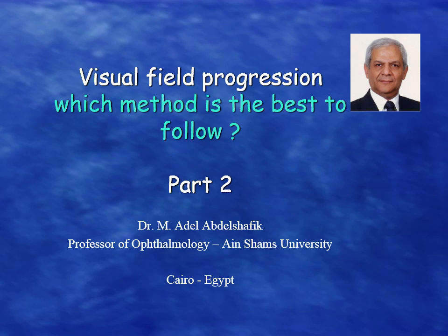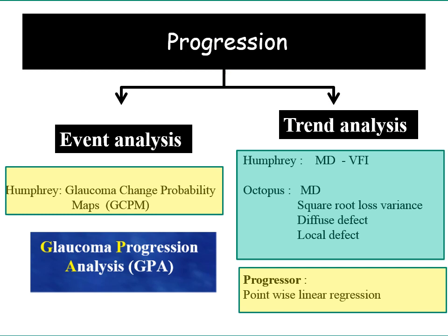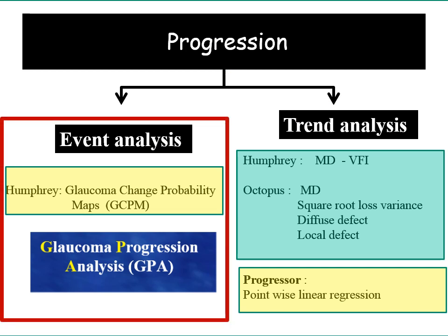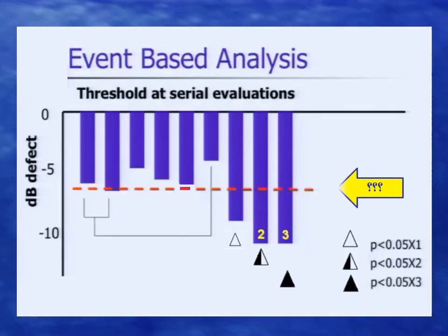In this part, I'm going to start discussing event analysis, like what we have in the glaucoma progression analysis found in the Humphrey machine — how it is calculated. Each location is checked using the first two baseline tests. The value of each location is recorded from the first and second tests and averaged.